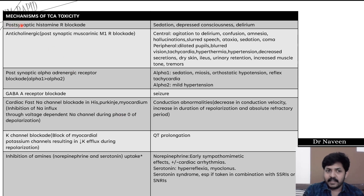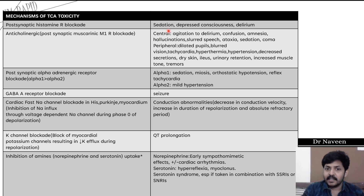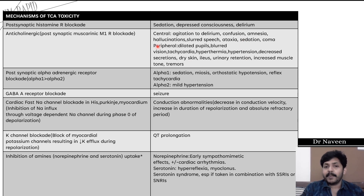The seven mechanisms of TCA toxicity: (1) Blockade of postsynaptic histamine receptors leads to sedation, depressed consciousness, and delirium. (2) Binding to postsynaptic muscarinic M1 receptors causes anticholinergic effects similar to atropine — centrally: agitation, delirium, confusion, amnesia, hallucination, slurred speech, ataxia, sedation; peripherally: dilated pupils, blurred vision, tachycardia, hyperthermia, hypertension, decreased secretions, dry skin, ileus, urinary retention. (3) Blockade of postsynaptic alpha-adrenergic receptors: alpha-1 blockade causes sedation, miosis, orthostatic hypotension, and reflex tachycardia; alpha-2 blockade causes mild hypertension.